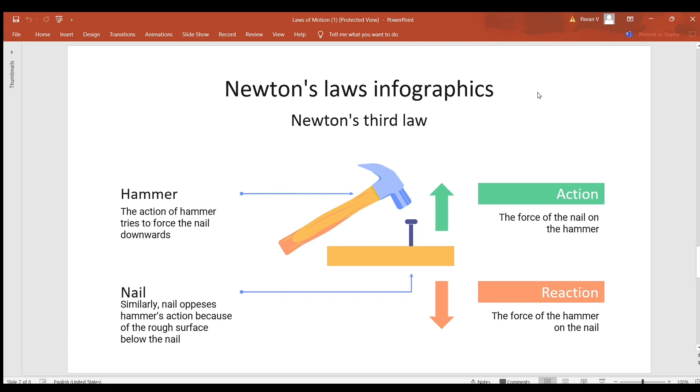Similarly, the nail opposes the hammer's action because of the rough surface below the nail. If there was no third law of motion, life would not exist on earth, we could not ride horses, and we could not keep photo frames on walls.